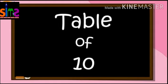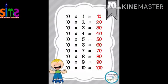Let's start. Ten ones are ten, ten twos are twenty, ten threes are thirty, ten fours are forty, ten fives are fifty, ten sixes are sixty, ten sevens are seventy, ten eights are eighty, ten nines are ninety, ten tens are hundred. Kids, this is a very easy table.